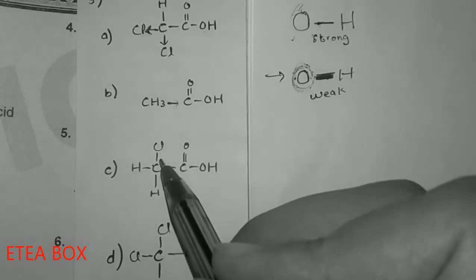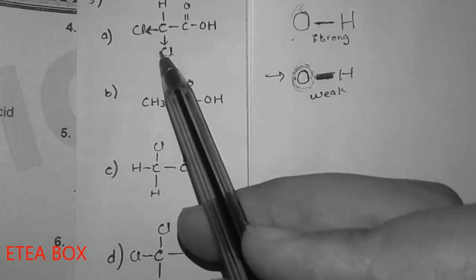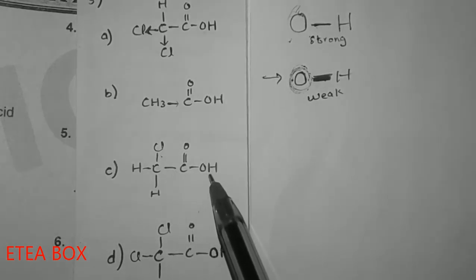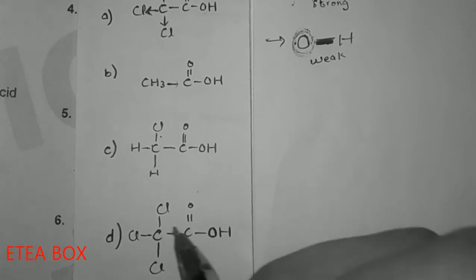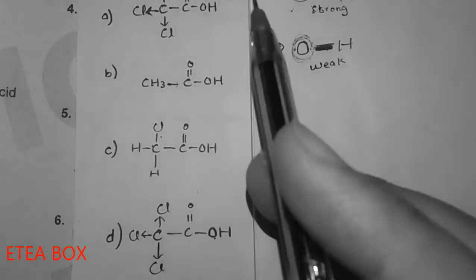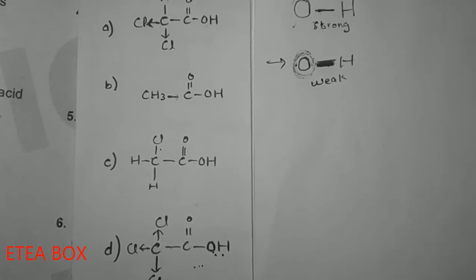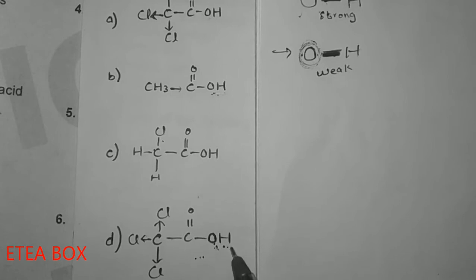Looking at option C, there is only one chlorine atom, and option D has two chlorine atoms — these two chlorine atoms attract more electrons toward themselves, making the O–H bond very much weaker. Option D has three chlorine atoms attached to the carbon, so the electron-withdrawing power is strongest of all, making that bond very weak and hydrogen easily detached — making it the strongest acid. So the O–H bond is strongest in option B, making it the weakest acid.